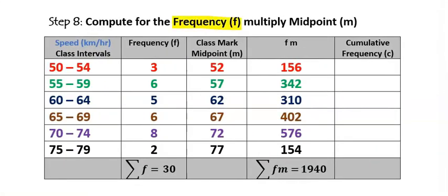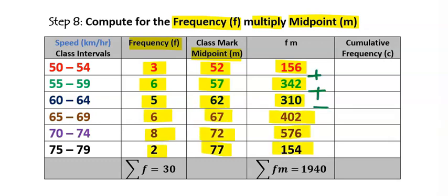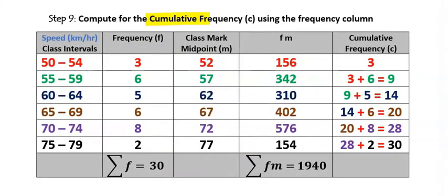Step number eight: compute frequency multiplied by midpoint (f×m). The first entry is 3 × 52 = 156; the next is 6 × 57 = 342; then 5 × 62 = 310. Applying the same to all classes and summing the f×m column gives a total of 1994.